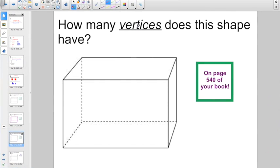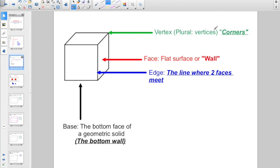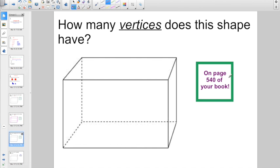How many vertices does this shape have? And if you remember, vertices are the corners, right? All this information, again, can be found on page 540 of your book.